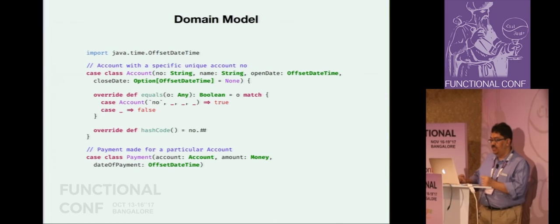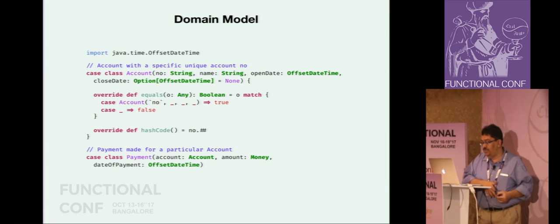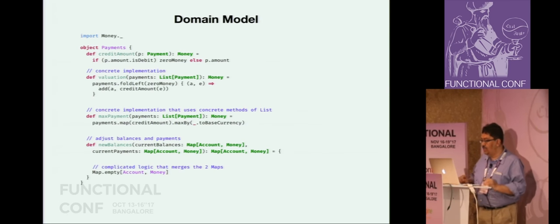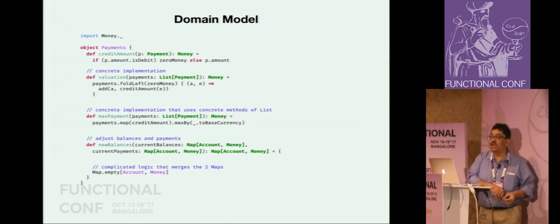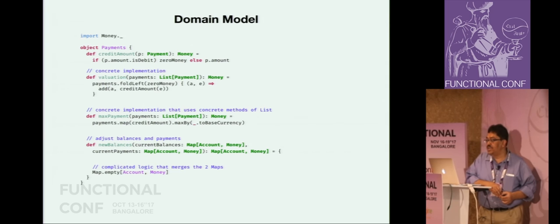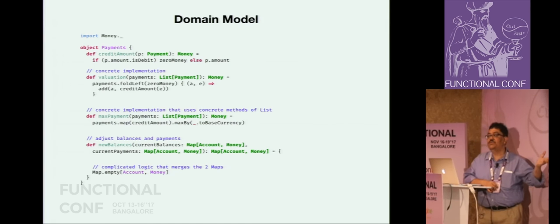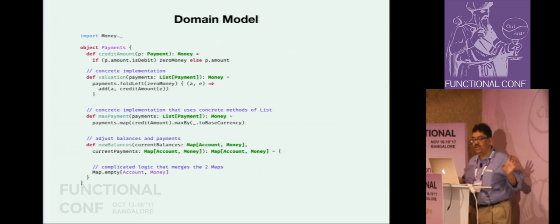Here is another class. The important class is the Payment class, which is the payment made for a particular account - for a given account we are receiving a payment of some amount of money on a specific key. Now look at the last function, new balances. Again, this involves fusion of two maps because our payment structure also consists of a map - in fact a map from account to Money. Previously Money itself was based on a map, and this is one more map. To add these two maps we would have to duplicate that code base once again.